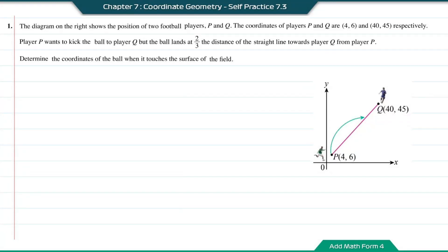Self-practice 7.3, question number 1. The diagram on the right shows the positions of two football players, P and Q. The coordinates of player P and Q are (4, 6) and (40, 45) respectively.